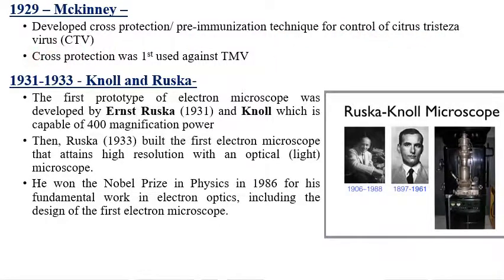McKinney developed the cross-protection technique, also called pre-immunization technique, for control of Citrus tristeza virus. Though the technique was first developed for tobacco mosaic virus, it is now extensively used for Citrus tristeza virus. Cross-protection involves using mild strains of a virus to prevent or reduce infection by severe strains of that virus.